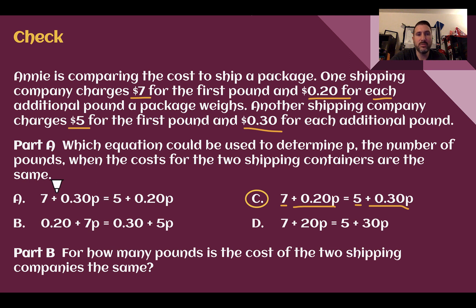A again looks pretty similar, but 20 cents goes with the seven, 30 cents goes with the five. So A has them backwards.